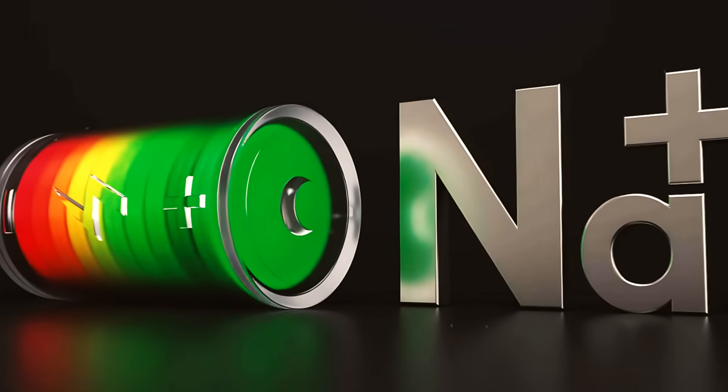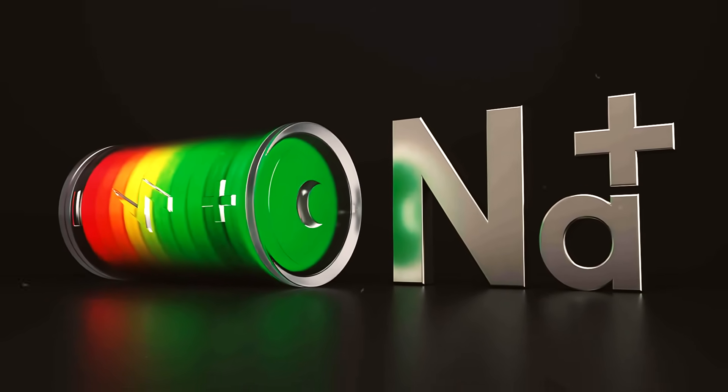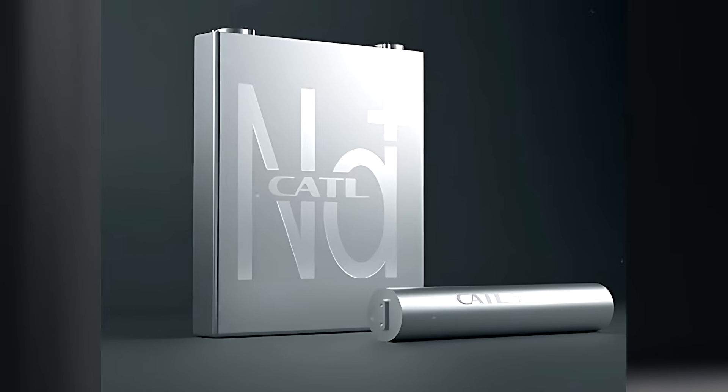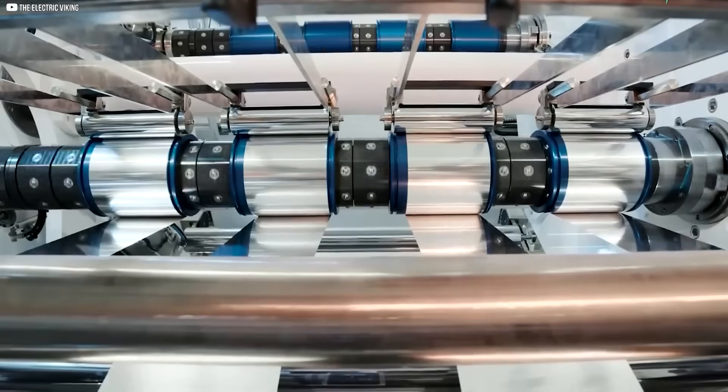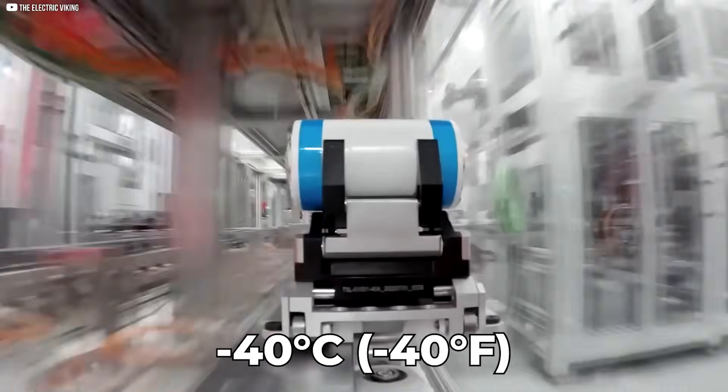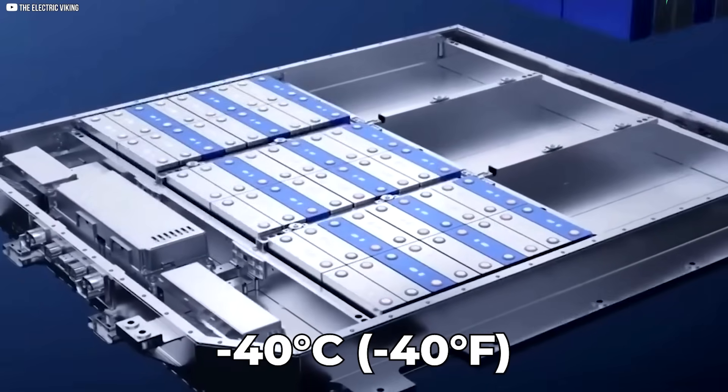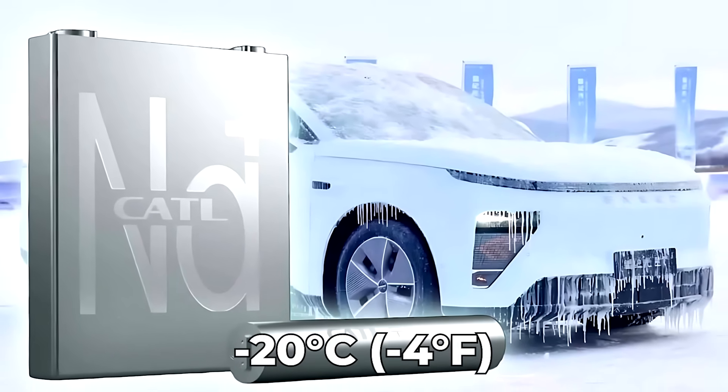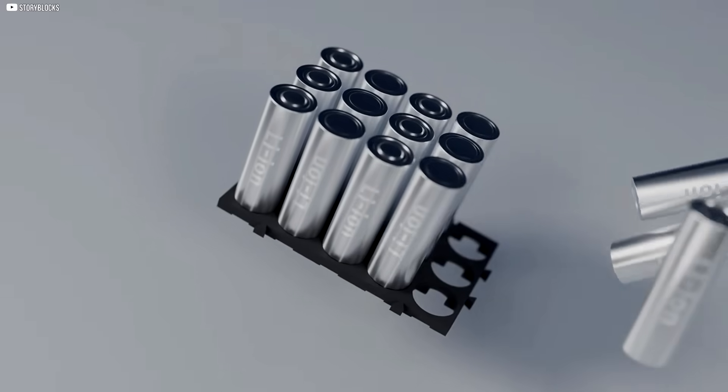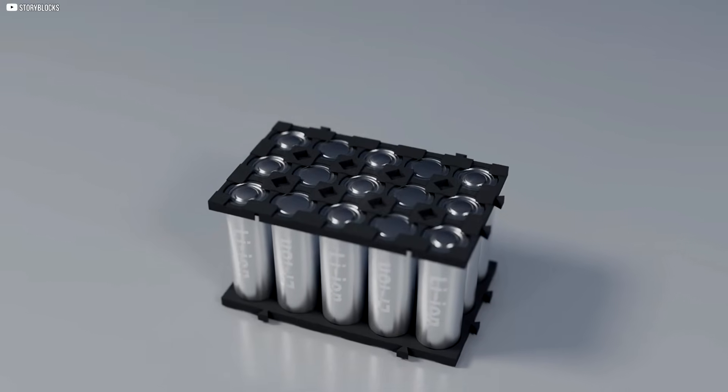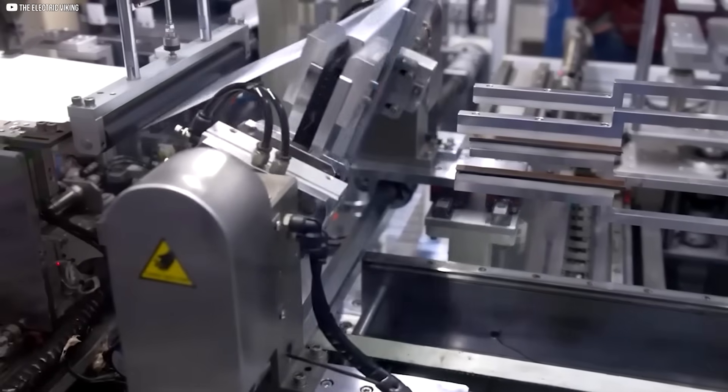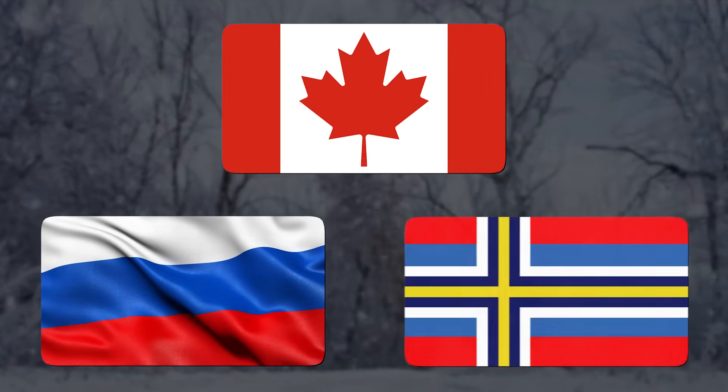Sodium-ion batteries perform much better in extreme temperatures. CATL's second-generation sodium-ion batteries can operate in conditions as low as minus 40 degrees Celsius (minus 40 degrees Fahrenheit), far below the minus 20 degrees Celsius (minus 4 degrees Fahrenheit) limit of lithium-ion batteries. This makes sodium-ion technology ideal for cold regions like Canada, Russia, and Scandinavia.